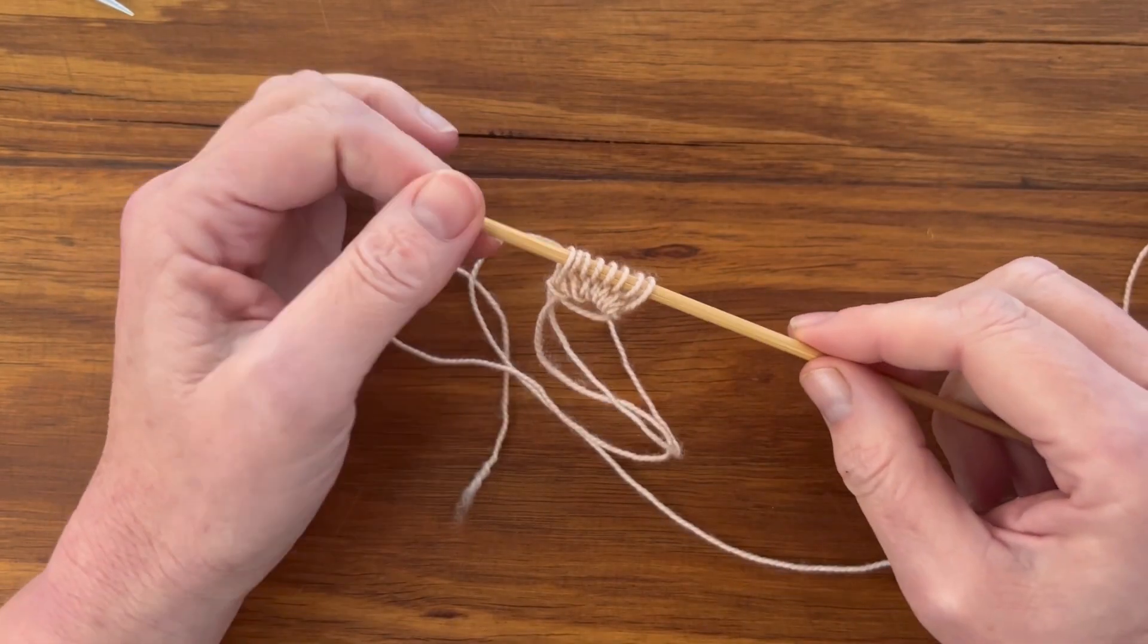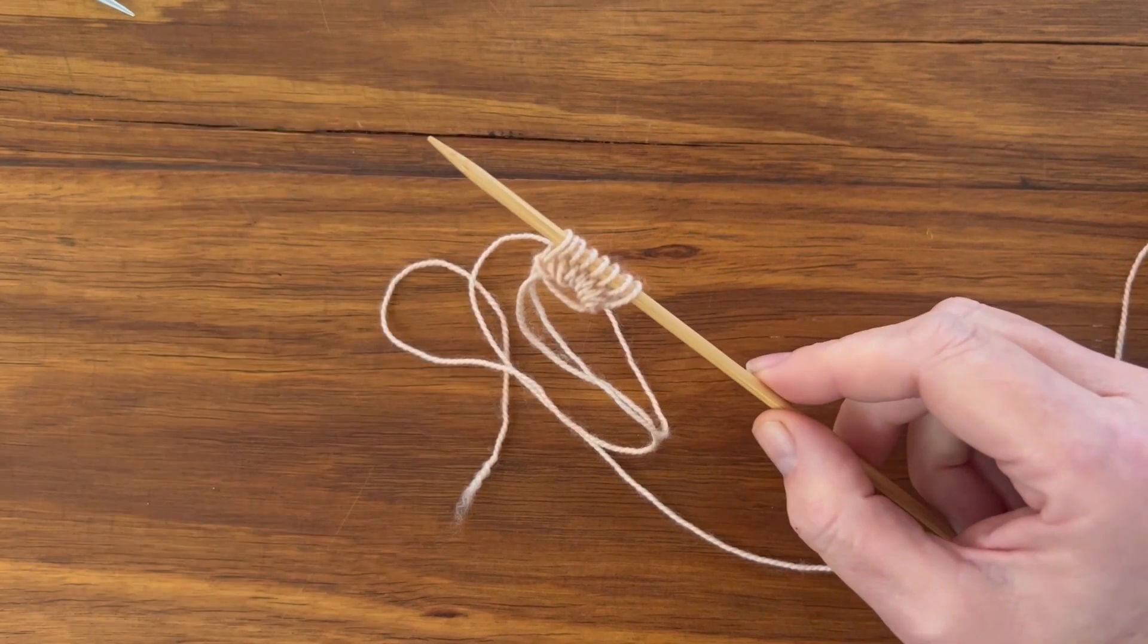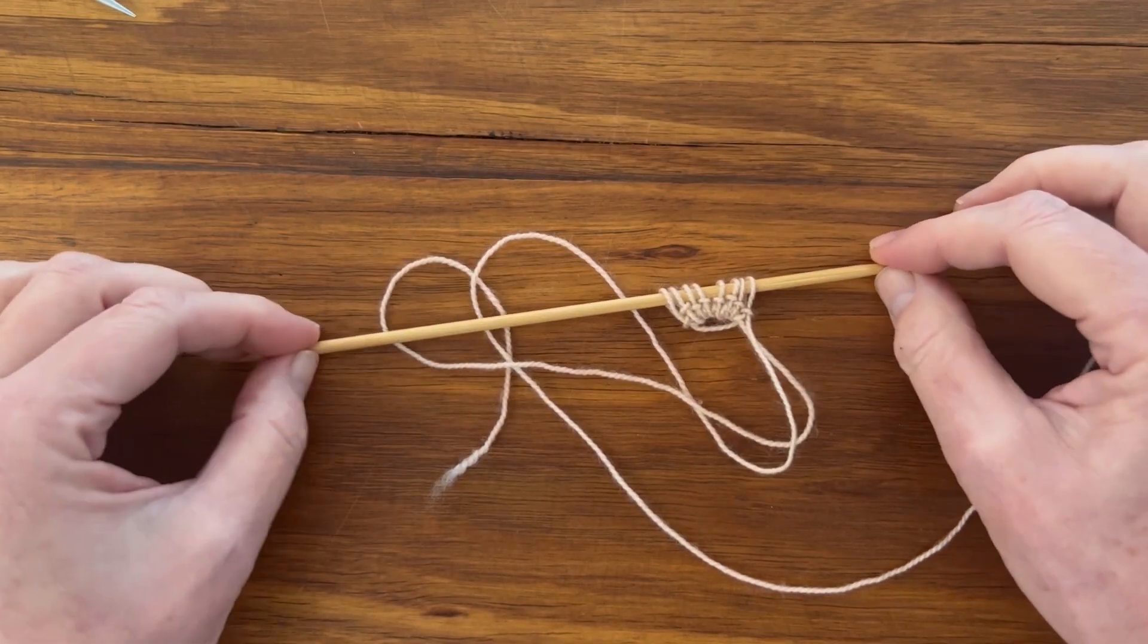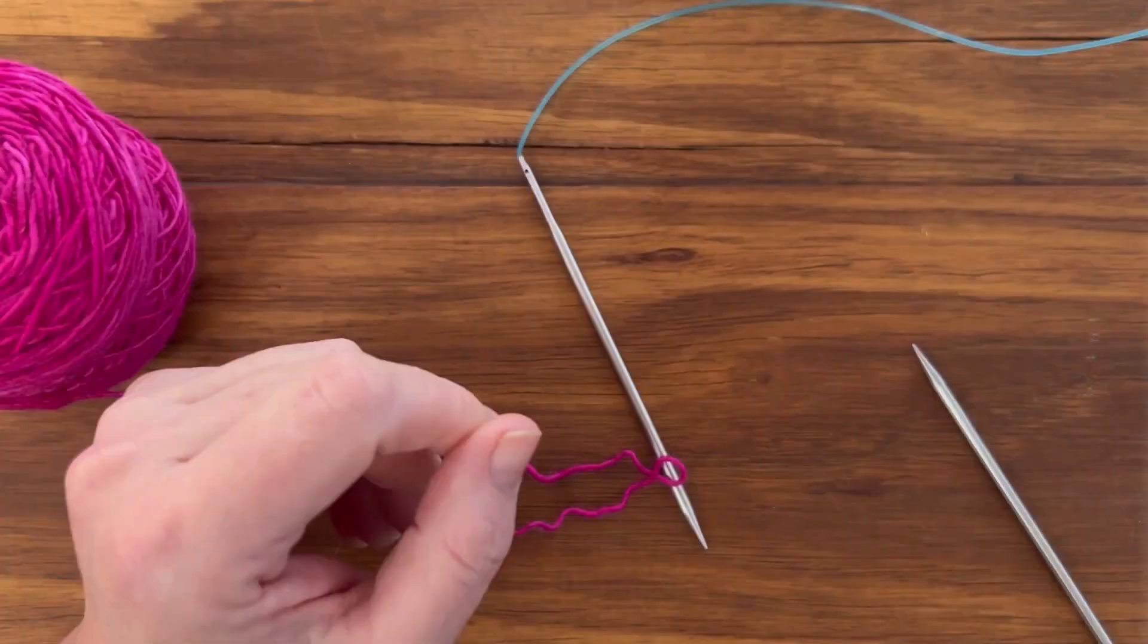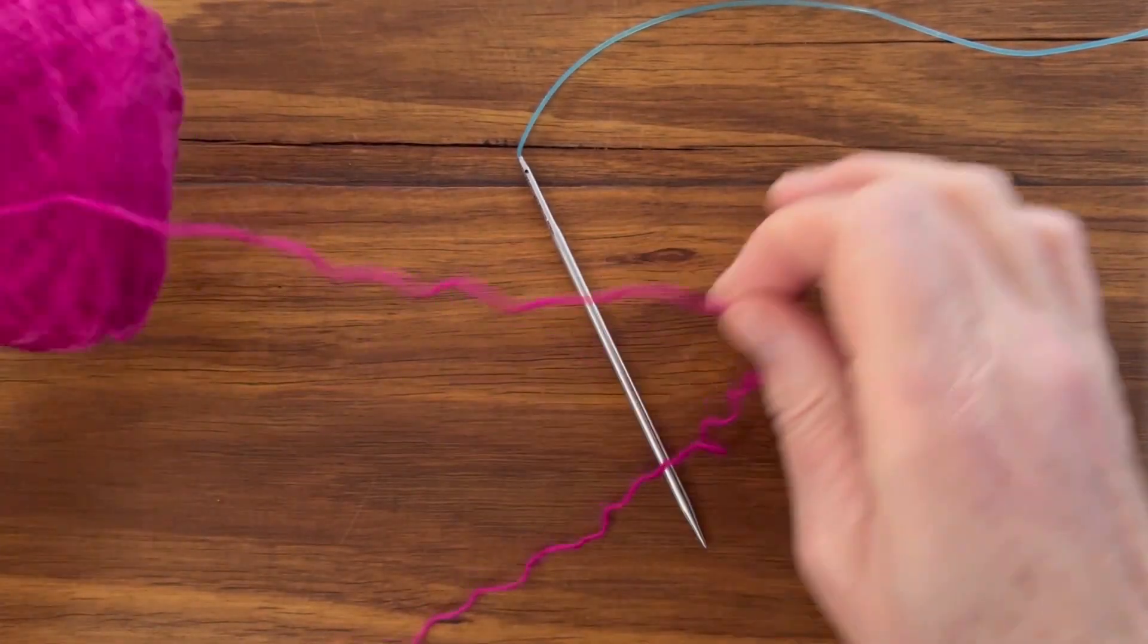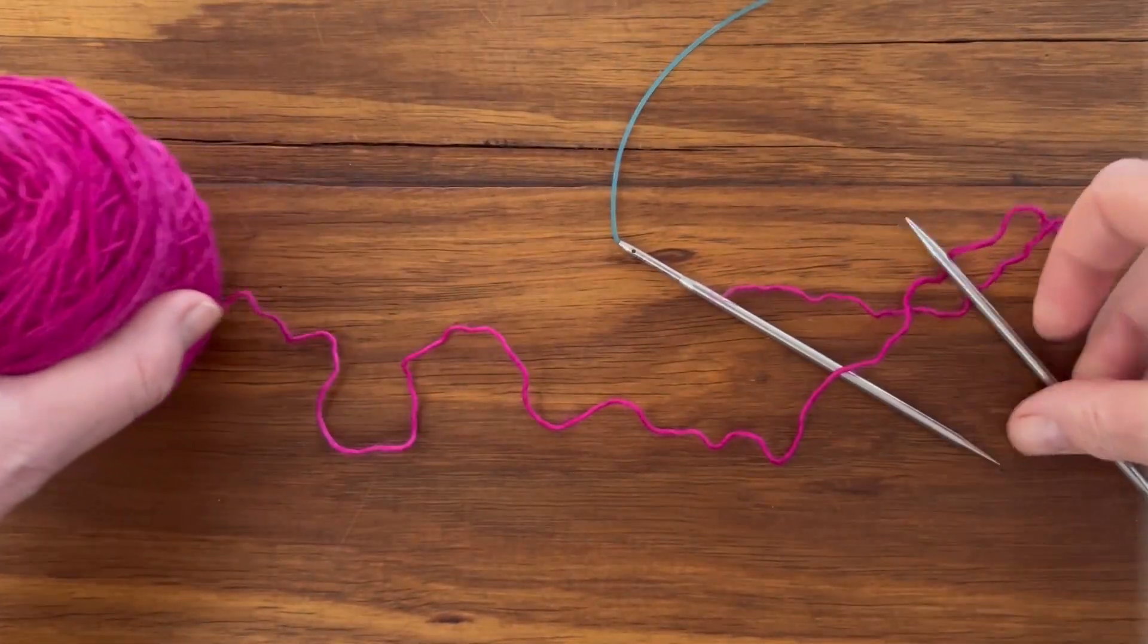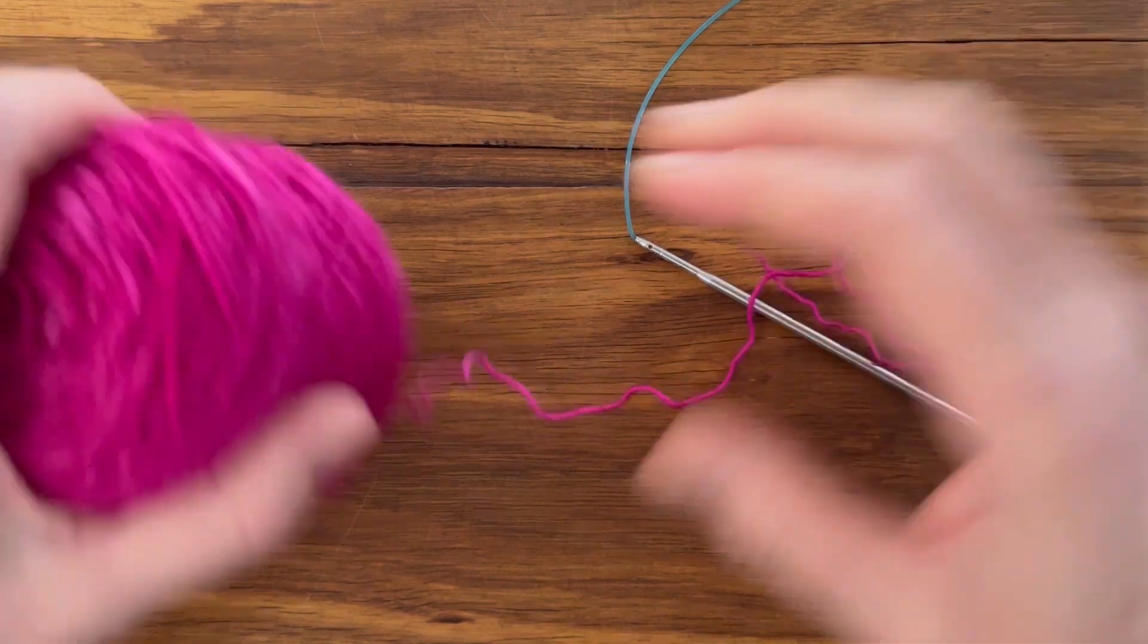And continue according to the pattern. You'll need to spread the stitches out onto multiple DPNs or divide them up to work on the magic loop. Okay for the second cast on. So you need the yarn and needles. Whichever needles you prefer to use for working in the round.